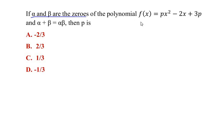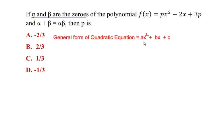By writing the general form of the quadratic equation first, it is given as ax² + bx + c, where a, b, c are the coefficients of the given quadratic expression.